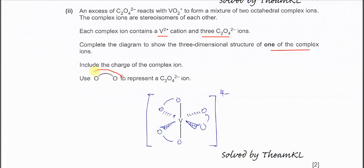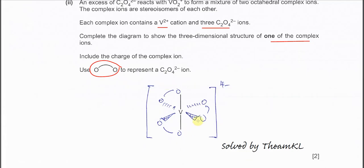Complete the diagram to show the 3D structure of one of the complex ions. You can use this one for the C₂O₄²⁻ ion. You just need to draw one of them. Actually, it should be optical isomers. Because when this transition metal ion with three bidentate ligands, like C₂O₄²⁻, it can form optical isomers.